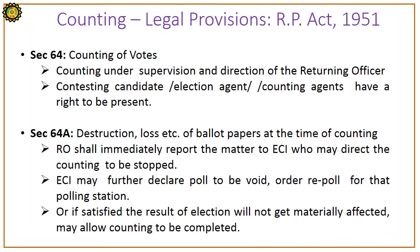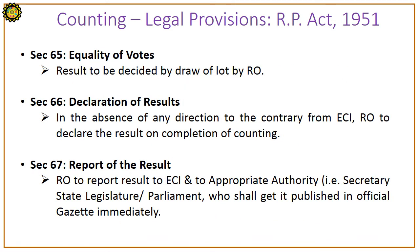Section 64A is about destruction, loss, etc. of ballot papers at the time of counting. The Returning Officer shall immediately report the matter to ECI, who may direct the counting to be stopped. ECI may further declare a poll to be void, order a repoll for that polling station, or if satisfied that the result of the election will not be materially affected, may allow counting to be completed.